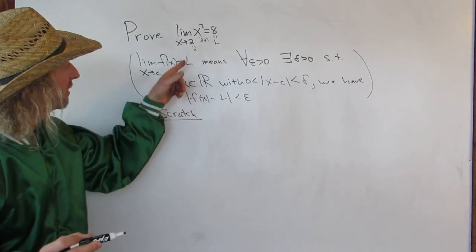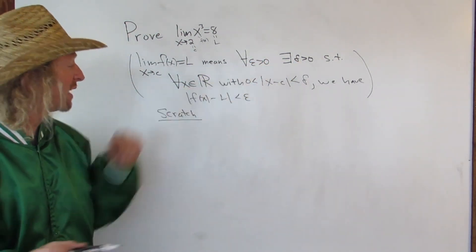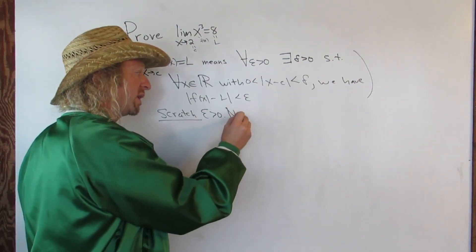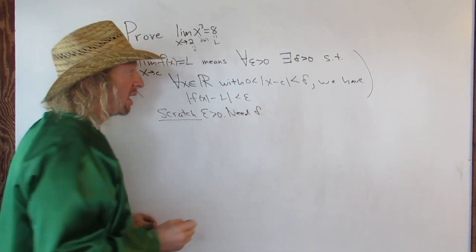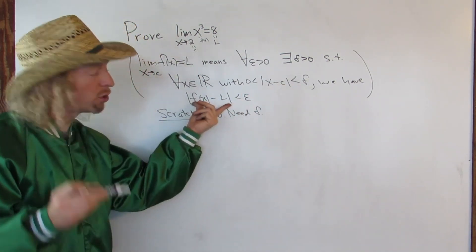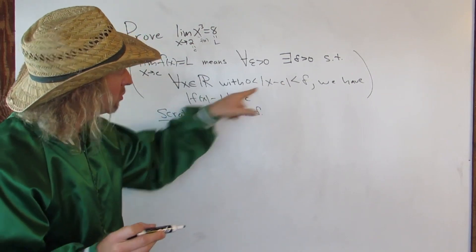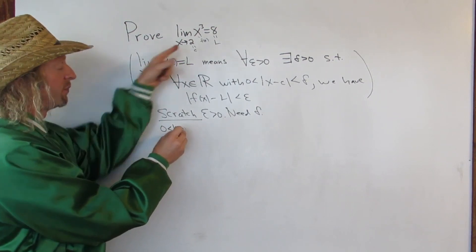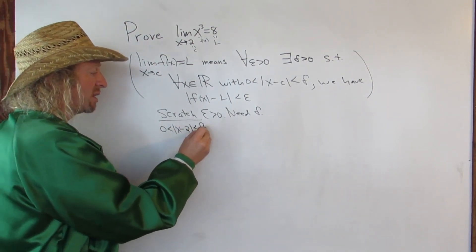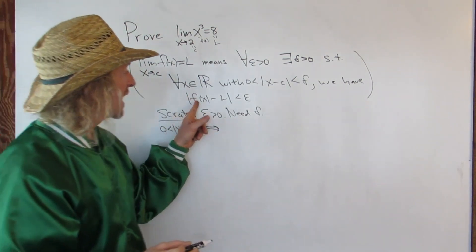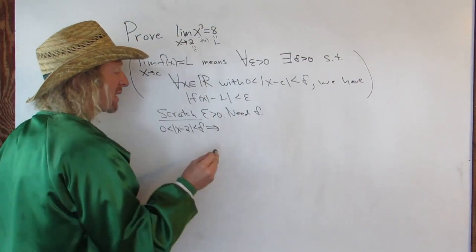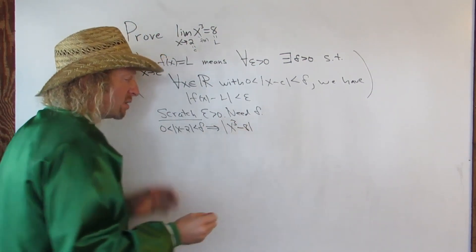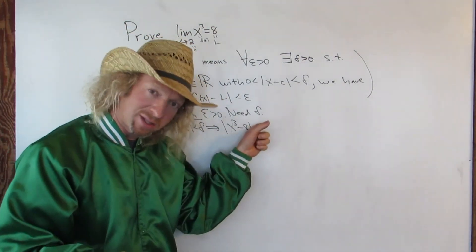To figure out the proof, we need to figure out our value of delta. We'll have an epsilon with us in the proof and we need to find delta. We're allowed to assume this condition, and then we have to show that this condition is true. So we assume the absolute value of x minus 2 is less than delta. We need this to imply that the distance between f of x and L is less than epsilon — so the absolute value of x cubed minus 8 less than epsilon. That's what we want.